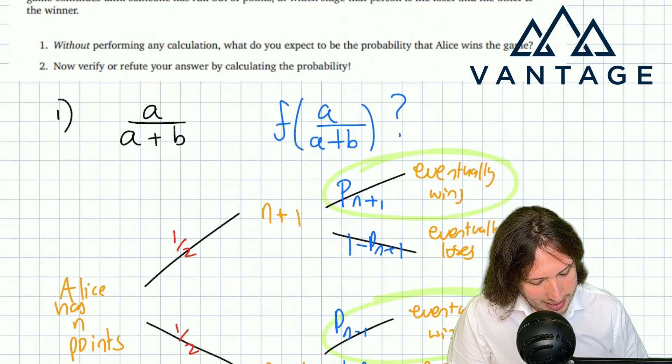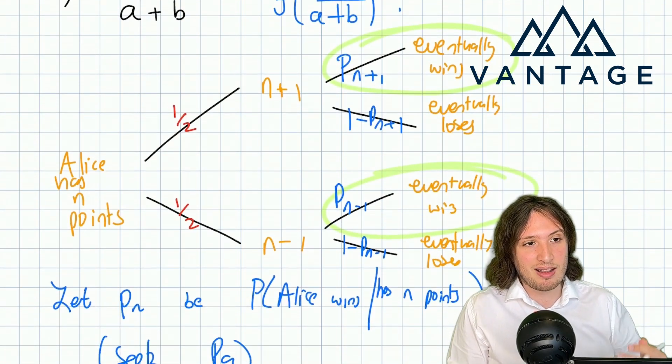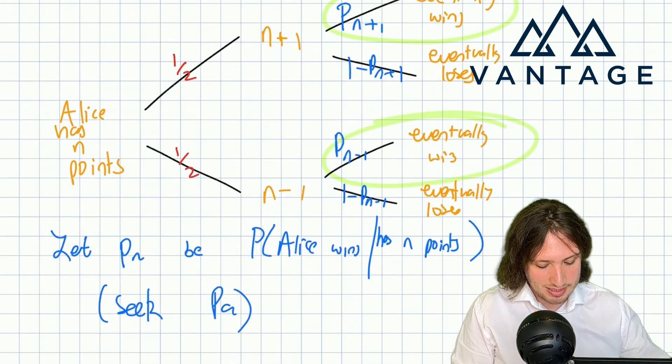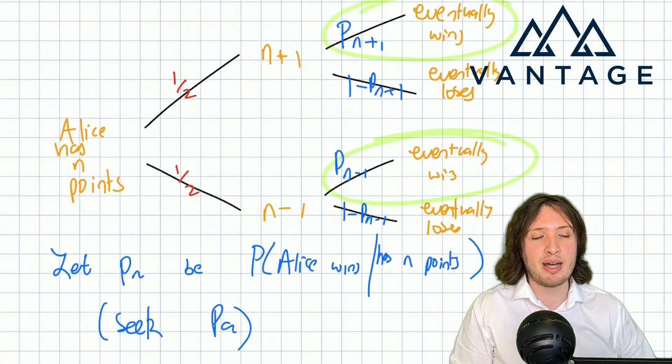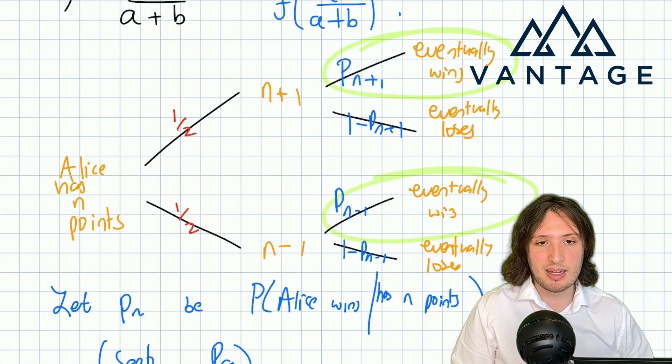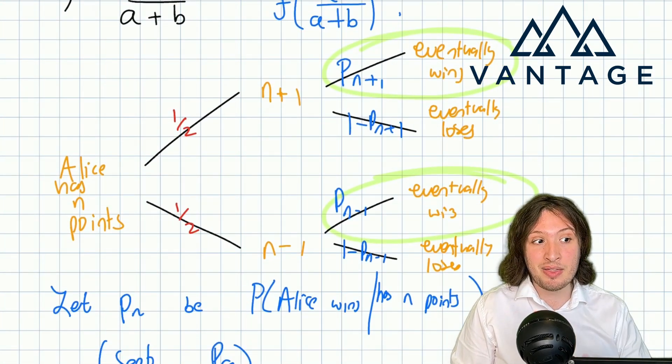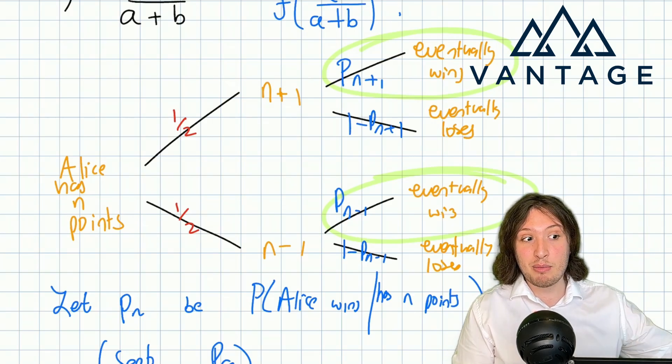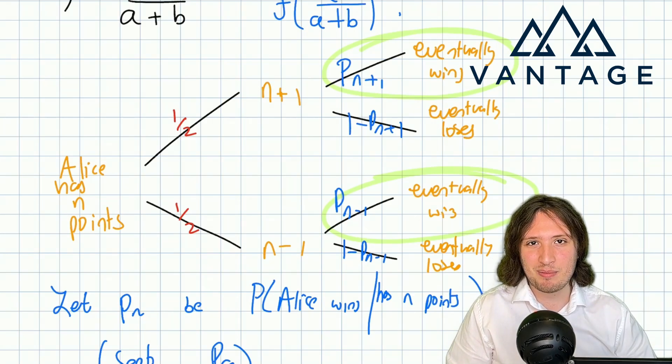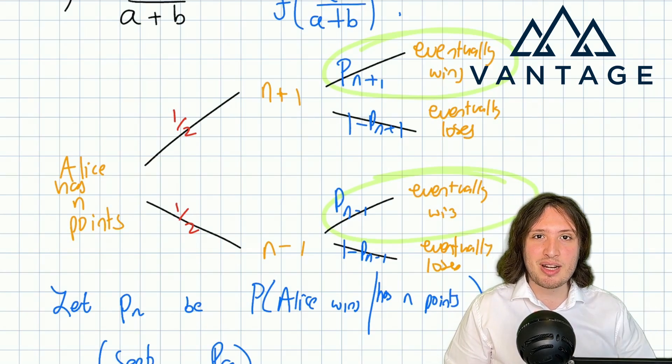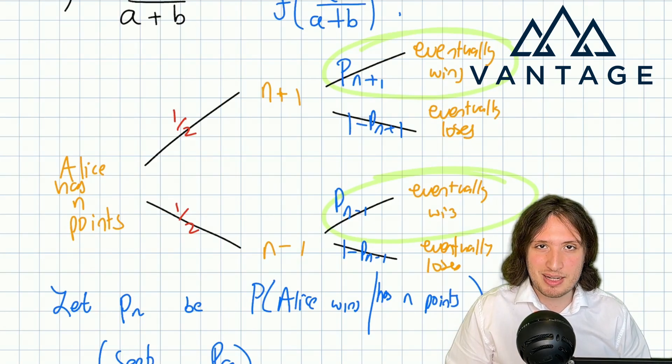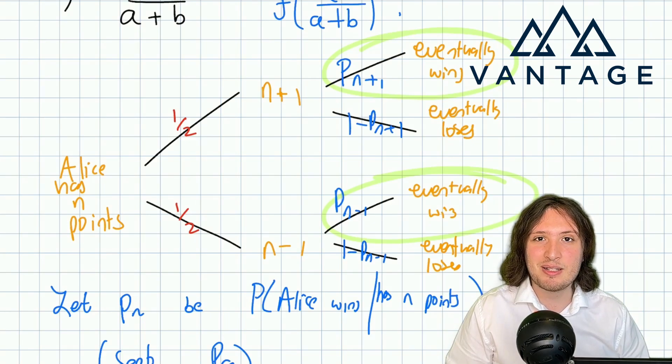So the main takeaway from this video should be the idea of recursive probability, realizing that by defining a probability to mean that something happens from a certain point, you can set up these sorts of term-to-term rules and turn a probability problem into a sequences problem. The sort of smoking gun that this technique will be useful is that after a move you're essentially playing a different version of the same game. I hope you found this video helpful. If you're interested in further support with interview preparation, do take a look at our website www.vantageadmissions.co.uk.